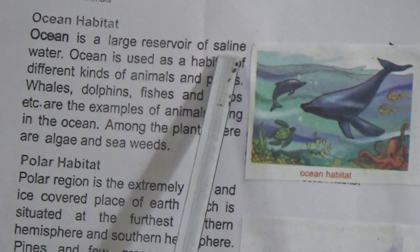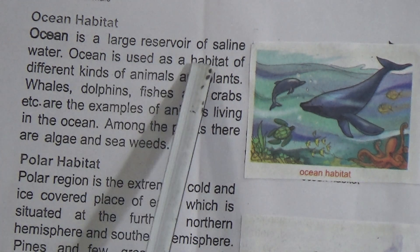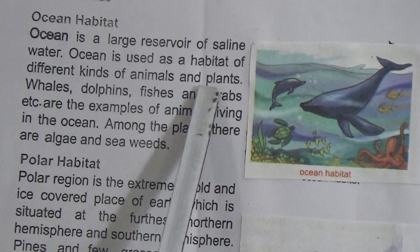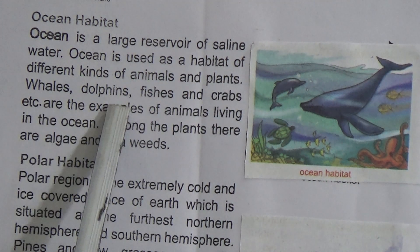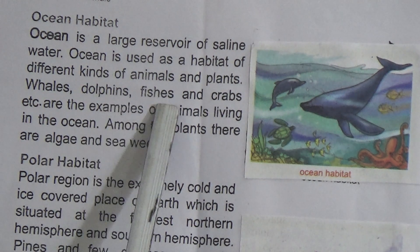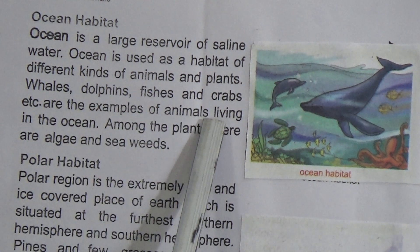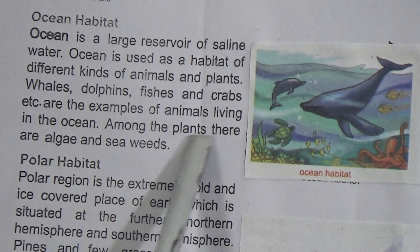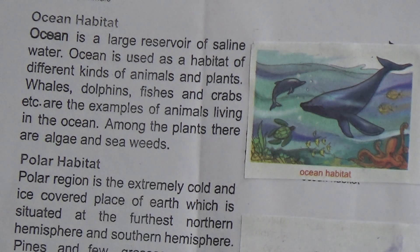Now, ocean habitat: the ocean is a large reservoir of saline water. The ocean is used as the habitat of different kinds of animals and plants. Whales, dolphins, fishes, and crabs are examples of animals living in the ocean. Among the plants, there are algae and seaweeds.